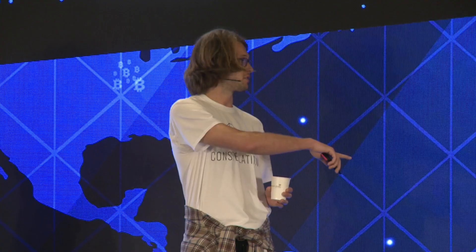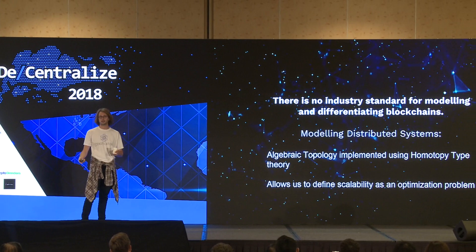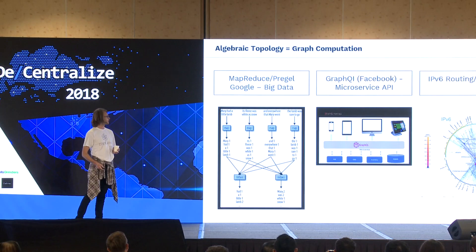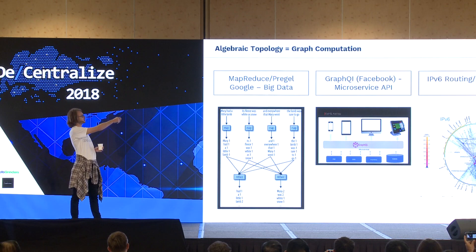All these different models use an application of algebraic topology — some pretty far-out math — specifically something called homotopy type theory, or the notion of inheritance or type hierarchy, which developers probably use every day. It allows us to define scalability as just an optimization problem. We use these techniques all the time — major industry players like Google with MapReduce and Pregel, GraphQL as a microservice API, and quite literally the internet itself — all applying algebraic topology to implement graph computation.